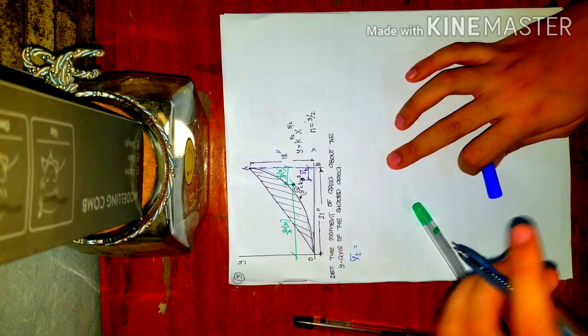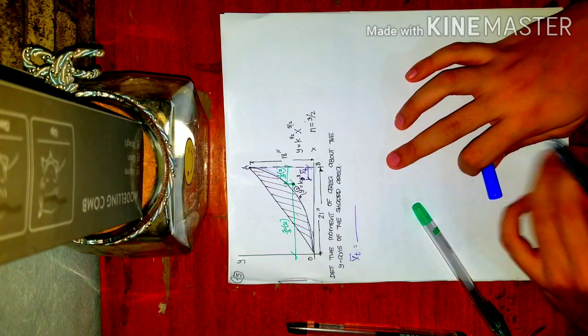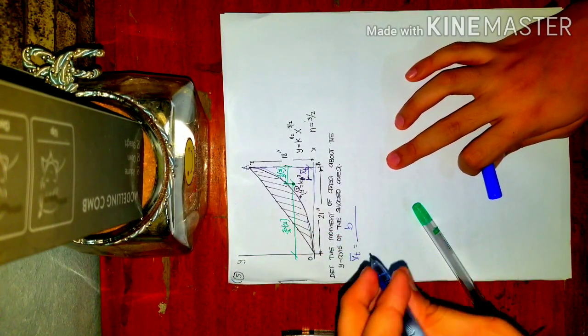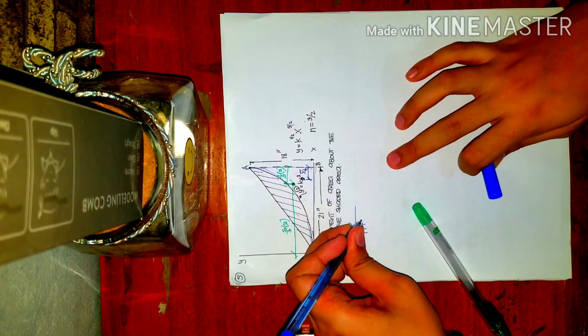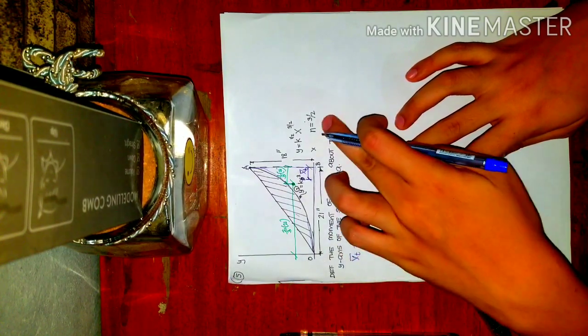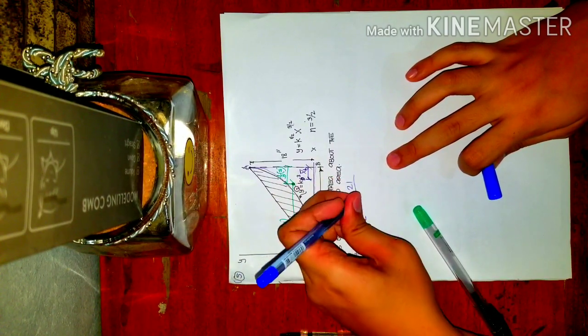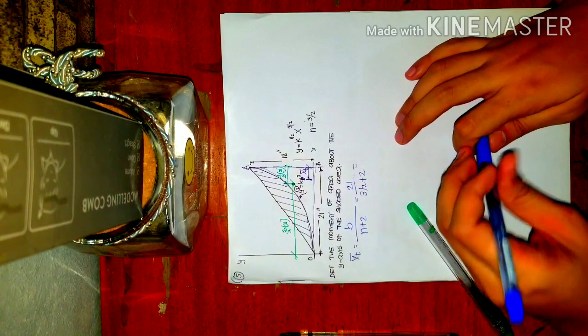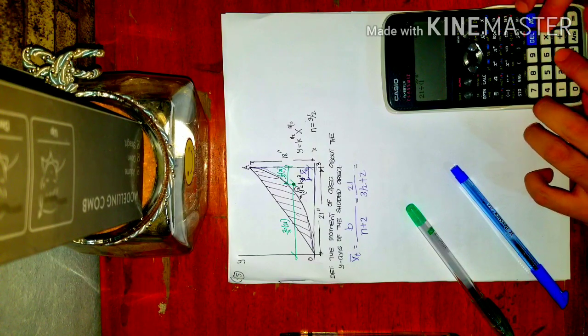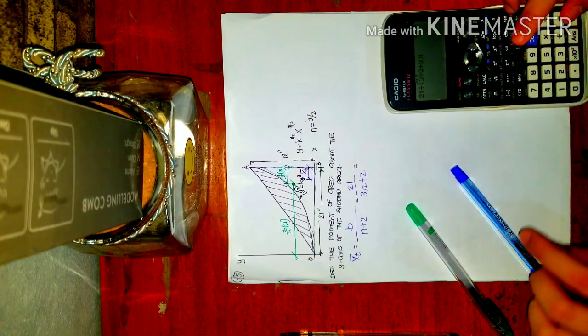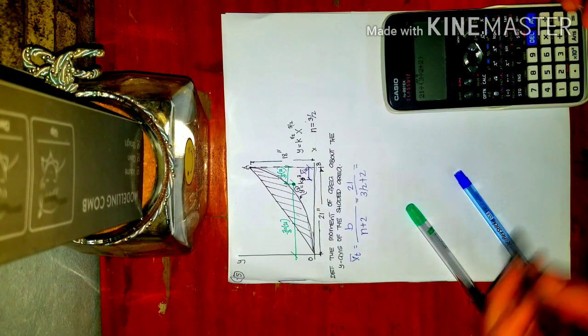X bar t would be just equals to, so what is the general formula for n degree curves? That will be the base over the degree of the curve. The general formula is base over n plus 2, where n is three halves. So substitute: 21 over three halves plus 2. Let's simplify. 21 divided by 3 divided by 2 plus 2.